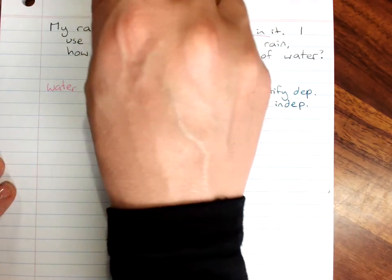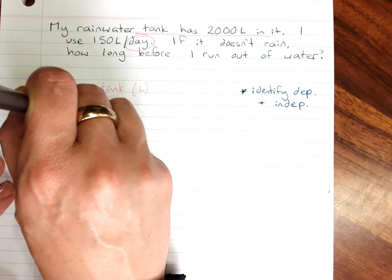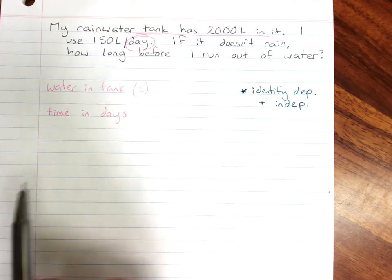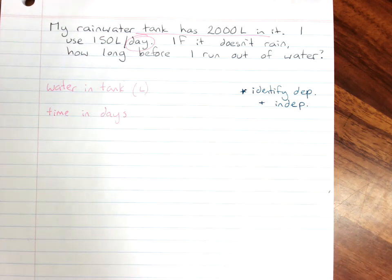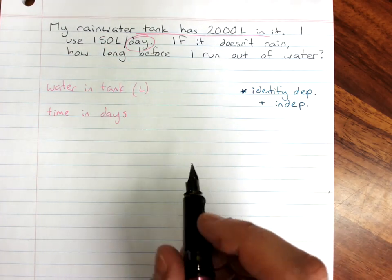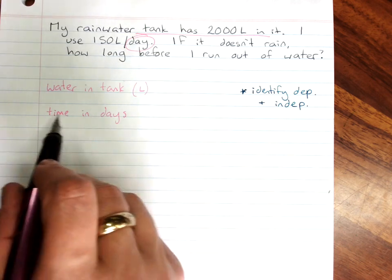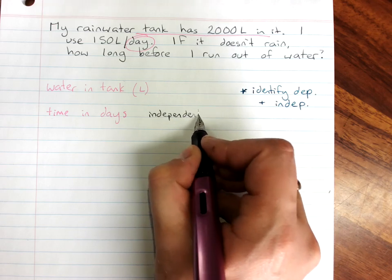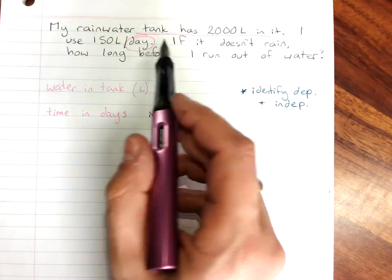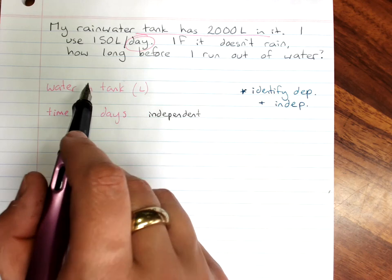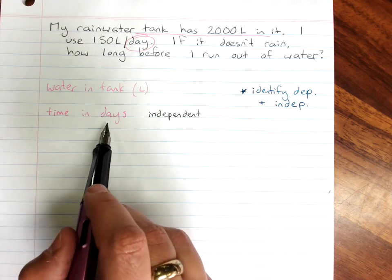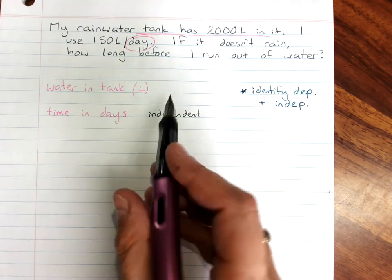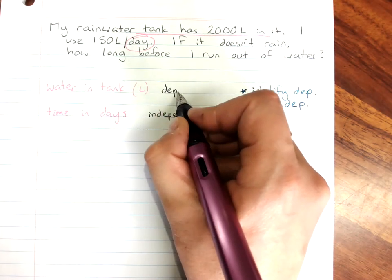And the easiest way we look for our variables, there's how much water is in my tank. So water in tank and that's in liters and time in days. Which one of those depends on the other? Time, as I said, almost always independent. And if we check how much water is in the tank depends on how many days it's been. Whereas if you try it the other way, how many days it's been depends on how much water in the tank. No, doesn't work. So this one is dependent.